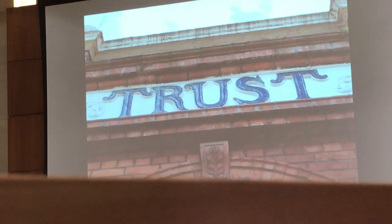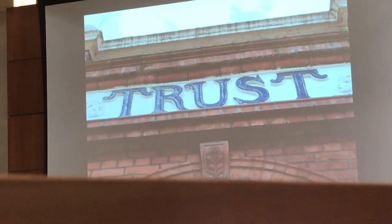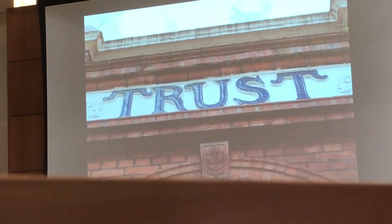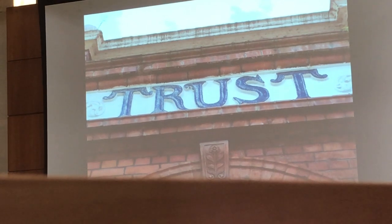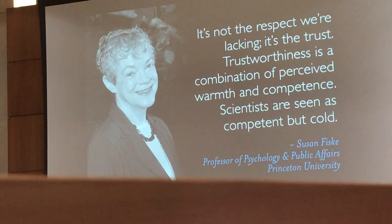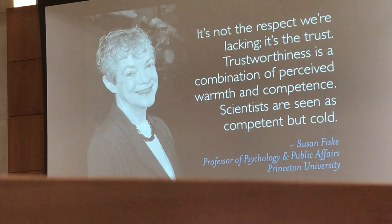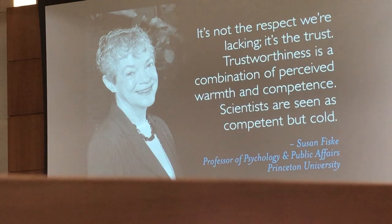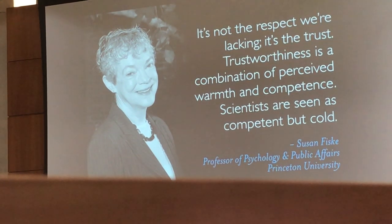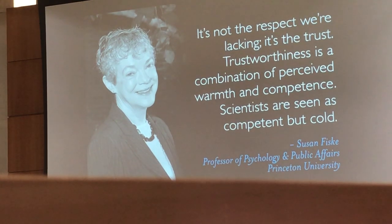Another principle of effective science communication is that it requires both respect and trust. Research shows that when faced with making a decision, we rely on social cues from people that we trust. Susan Fiske, a professor of psychology at Princeton, has found that there are two primary dimensions to social perceptions of trust: warmth and competence. Through her research on the perceived trustworthiness of various professions, scientists are seen as competent but cold. Social perceptions of an individual are much more nuanced and multifaceted — job, gender, race, age, background, and religion all play into social perceptions of individuals.